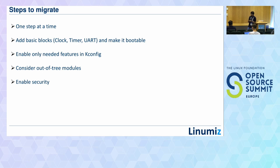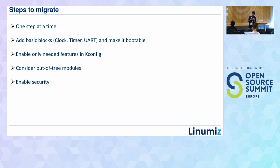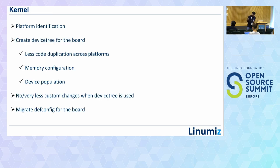For migrating from Generation 3 hardware to run Generation 4 software using Linux 5.10 and latest U-Boot, adding a new hardware platform to the Linux kernel or U-Boot is exactly what we did. Even though IP block support is fully available, we don't want to break the whole system. I recommend starting with basic blocks — clock driver, timer driver — getting the device tree functional, then adding peripherals one step at a time.